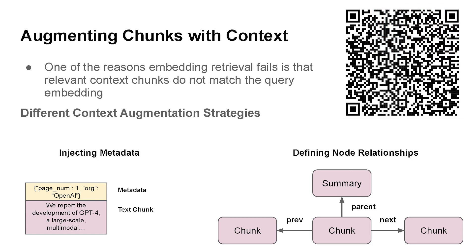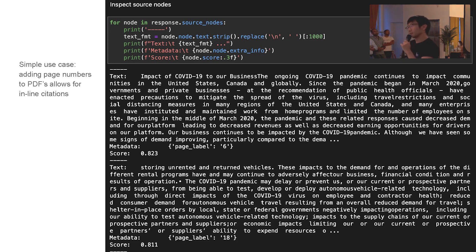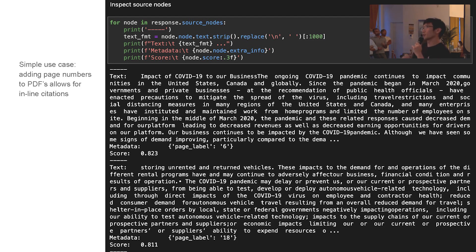Some techniques for better-performing RAG: one basic option is injecting metadata for every piece of text. This naturally feeds into vector databases that support metadata filters like Pinecone and Weaviate. Metadata can also bias the embedding for better retrieval, and gives the language model additional context during synthesis — for instance, adding page numbers to PDFs if that's in the chunk metadata. You can also use LLMs for automatic metadata extraction. One technique is reverse HyDE: given a piece of context, generate a set of questions that this piece of context could answer.